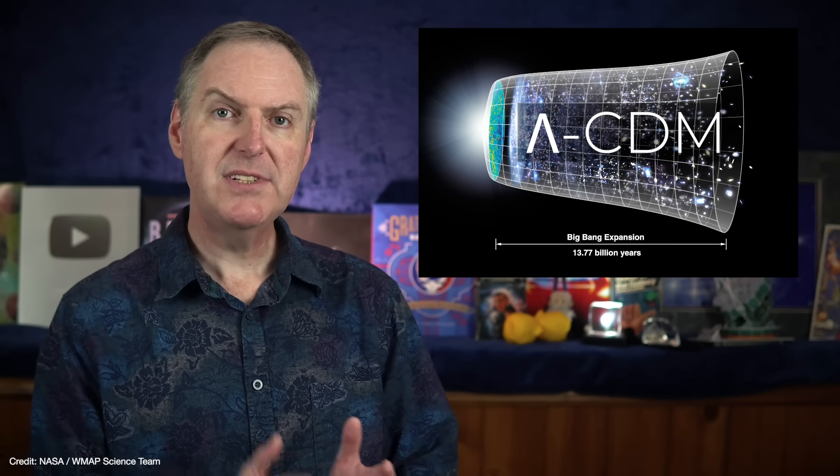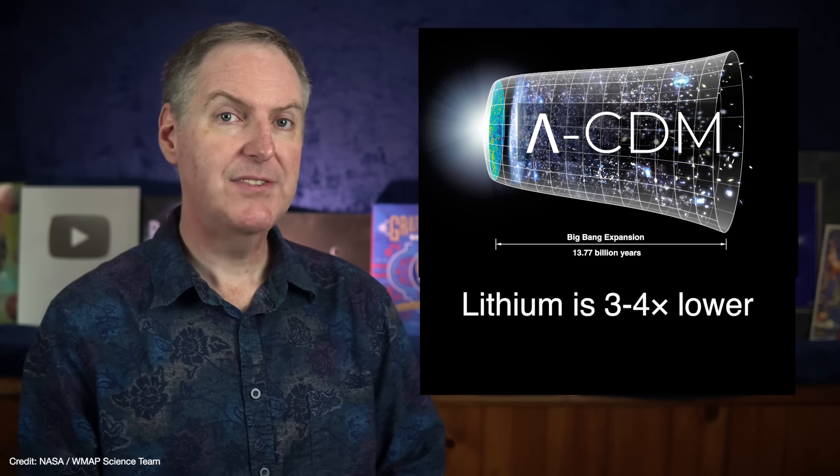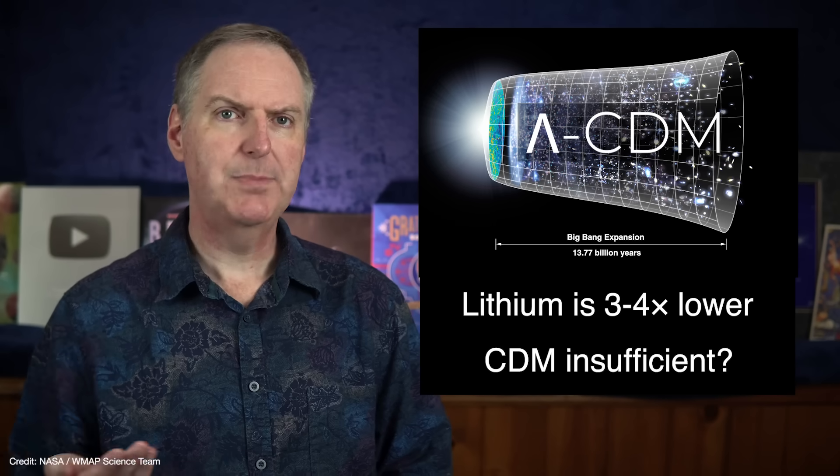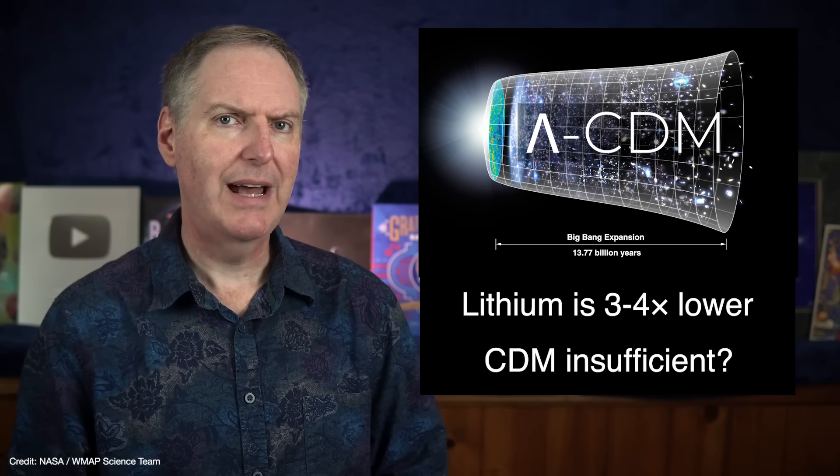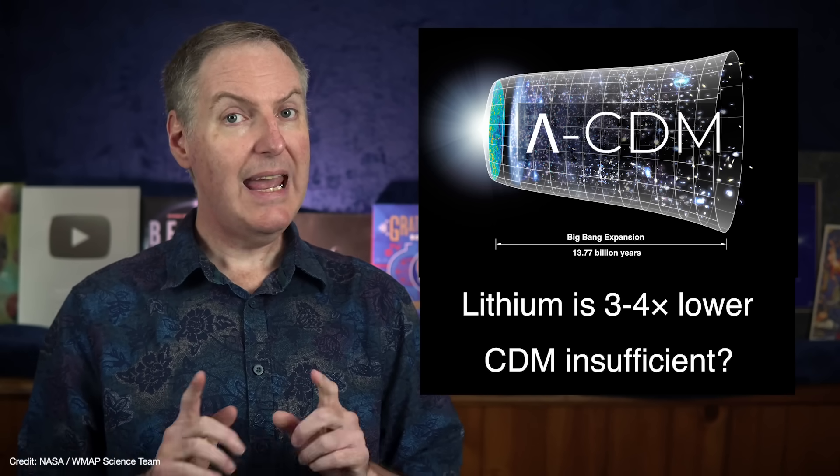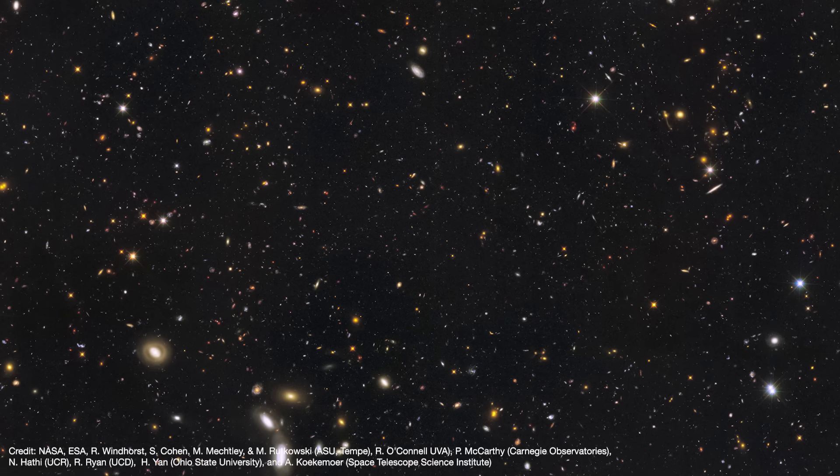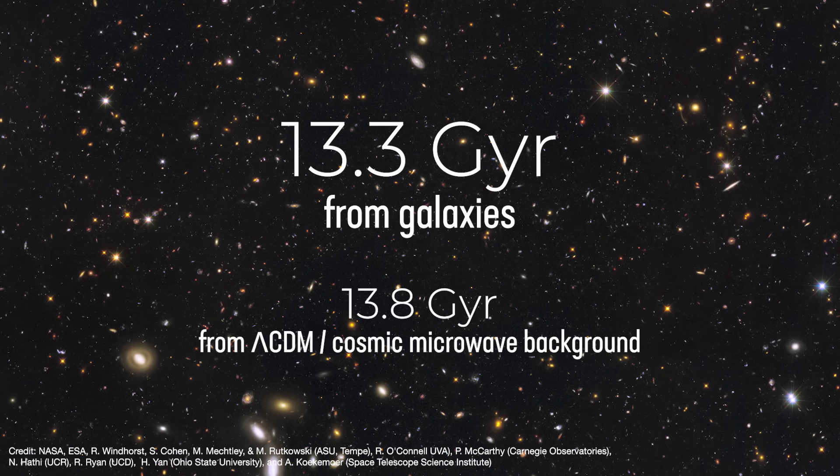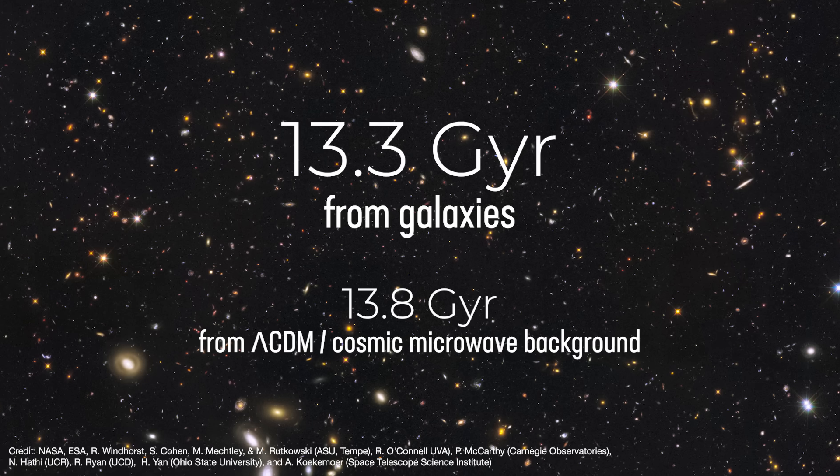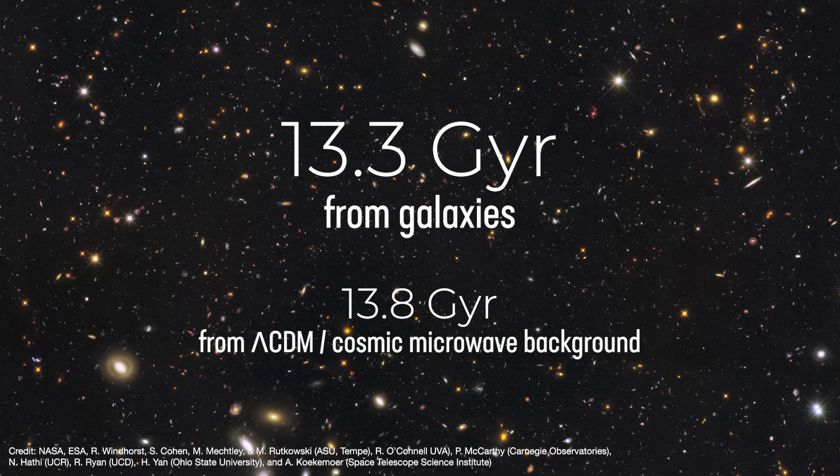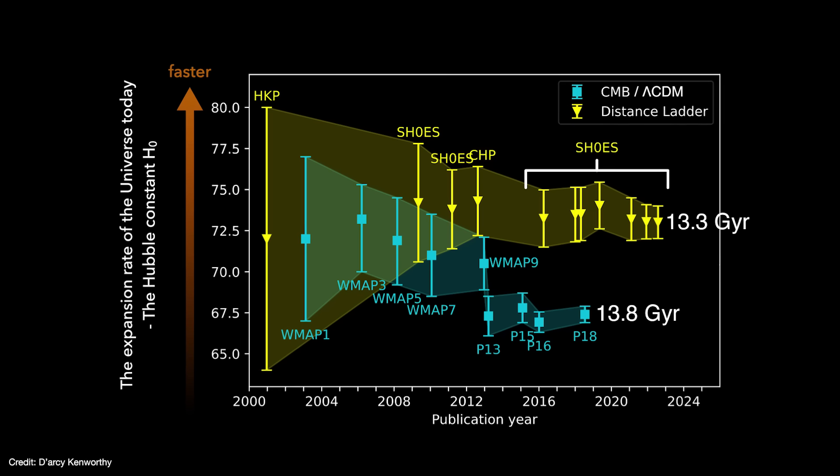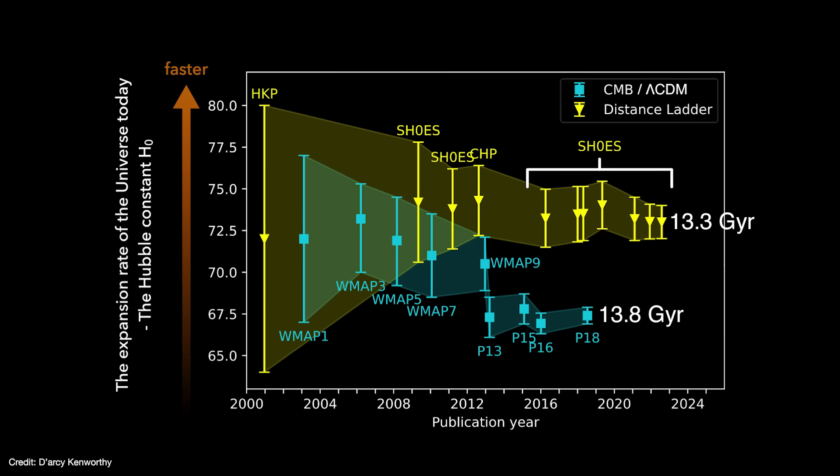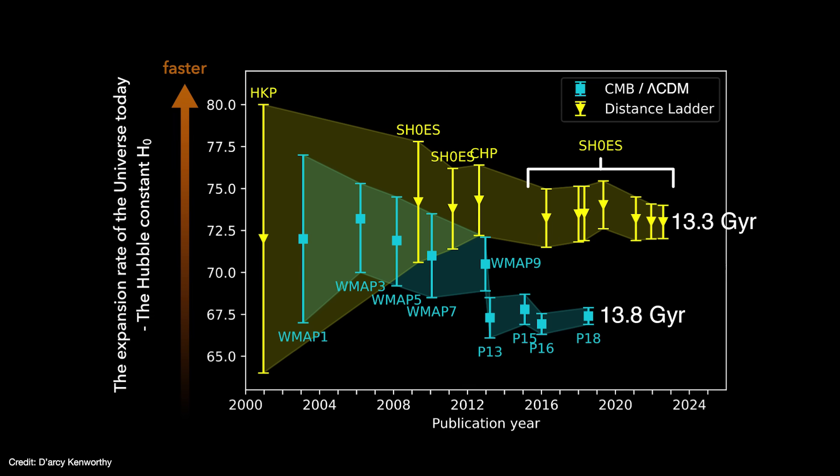For example, Lambda CDM predicts the universe should have something like three to four times more lithium than it does. Dark matter doesn't explain all of the gravitational interactions we observe. And the age as measured from distance measurements to the furthest galaxies converges on an age of 13.3 billion years instead of 13.8 billion years. At first, it was assumed that the two methods would be reconciled with better data. But as measurements improved, the discrepancy has only become more apparent.